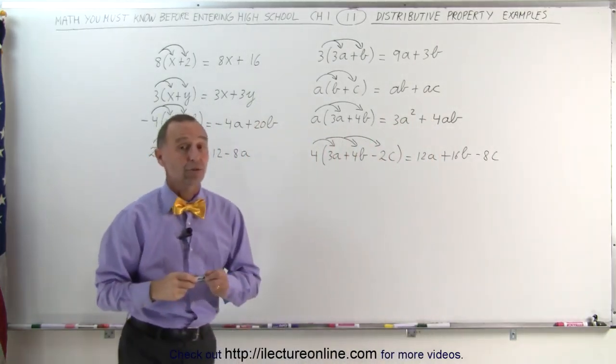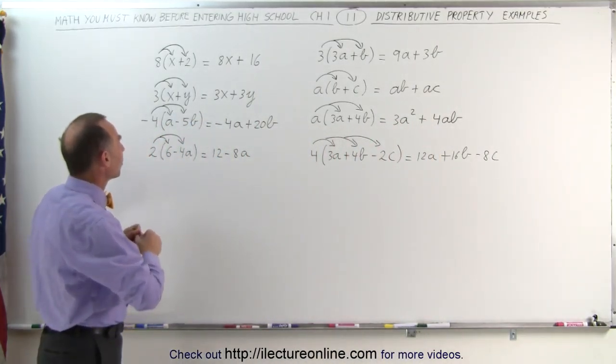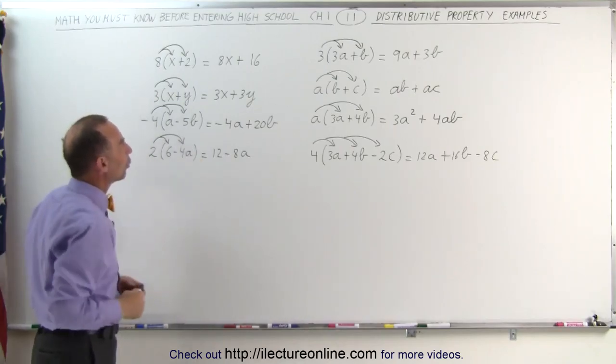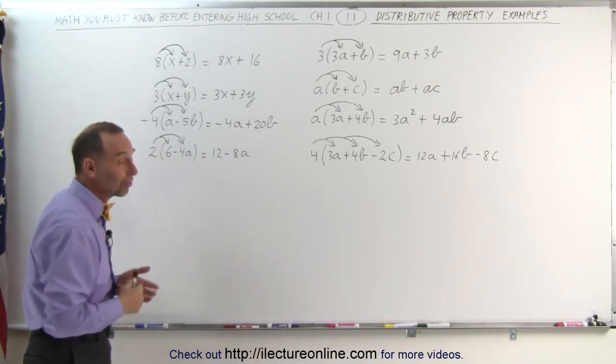And that's how we utilize the distributive property in case we have to multiply numbers or constants or variables times a binomial or a trinomial. That's how it's done.